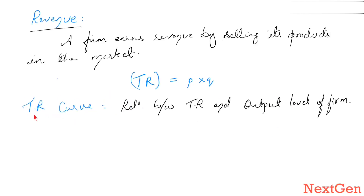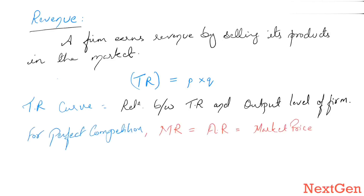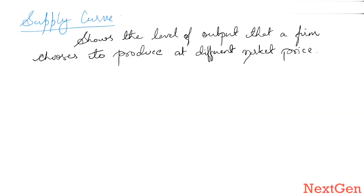Marginal revenue is the change in total revenue per unit change in quantity. The total revenue curve shows the relationship between total revenue and output level of the firm. In a perfectly competitive market, marginal revenue equals average revenue equals market price — they are all the same.